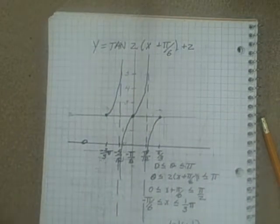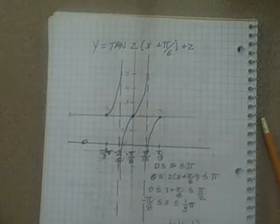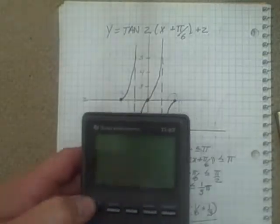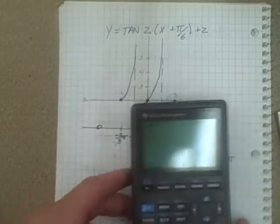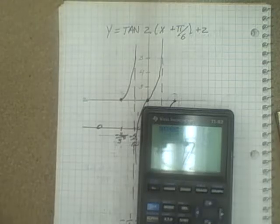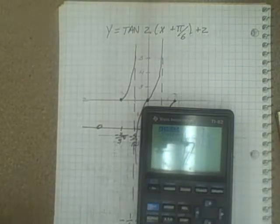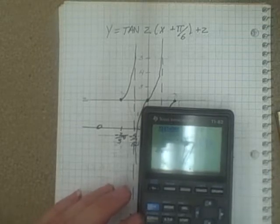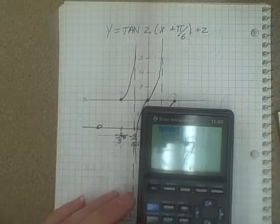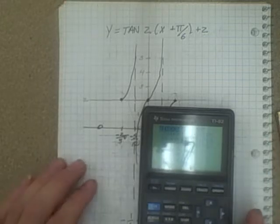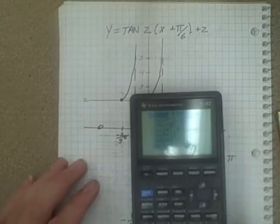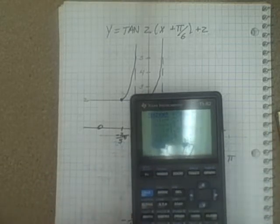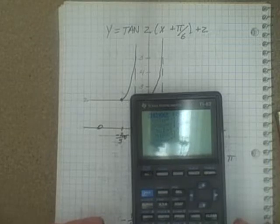So turn your calculator on. Just go to your window. And you want it to be negative 2/3 π. So in brackets, minus 2 divided by 3, bracket π. All the way to positive 1/3 π. So bracket 1 divided by 3, bracket π.